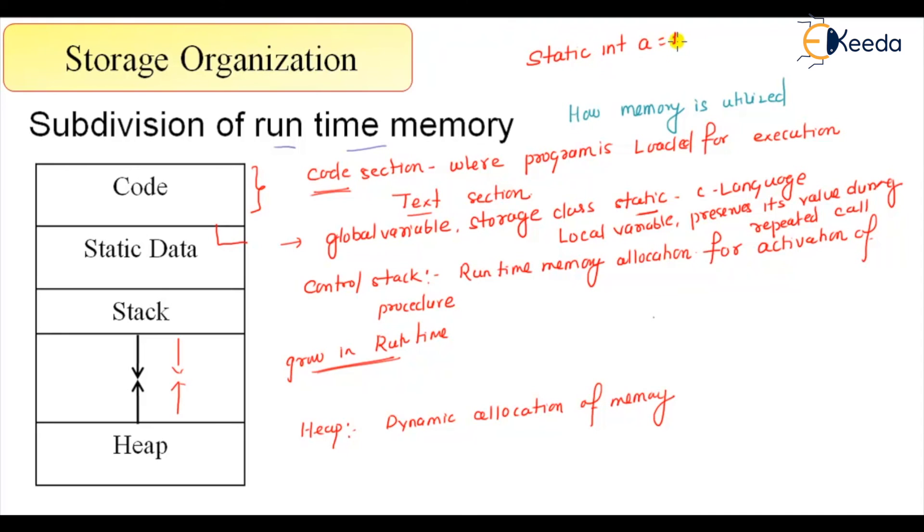For example, int a = 10. There are other properties also, but right now we can say if I have a global variable, the data will not go to the stack and it will go to the static data. Also one more point: local data, local variables, are stored in the stack.